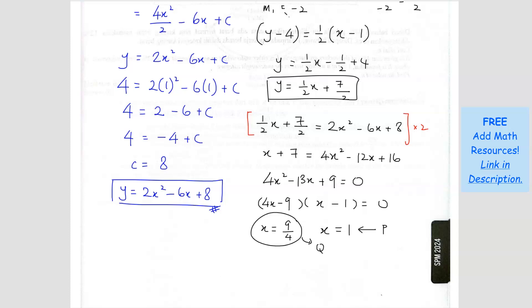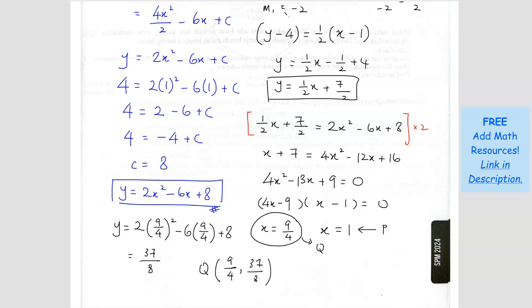We substitute x equals 9 over 4 into the curve equation: y equals 2 times (9 over 4) squared minus 6 times (9 over 4) plus 8. Using a calculator, in fraction form, we get y equals 37 over 8. So coordinate Q is (9 over 4, 37 over 8). In decimals, this is (2.25, 4.625). Either form is correct — both represent point Q.